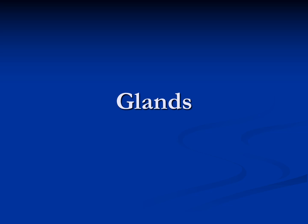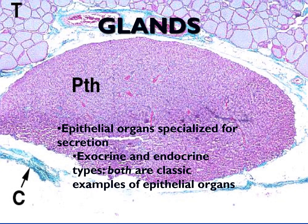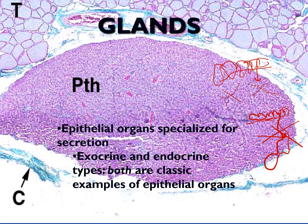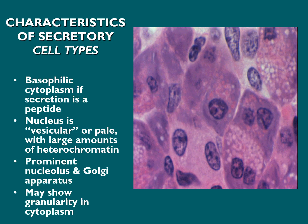Glands develop apart from the epithelium. We have the surface epithelium, the basement membrane, and the underlying connective tissue. The gland grows down into that connective tissue. If it keeps its duct system, we call it exocrine; if it loses the duct, we call it endocrine. The important point is that the origin of the gland is always from the epithelium.